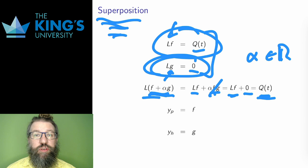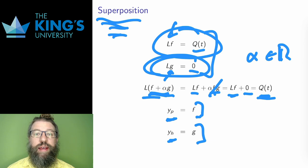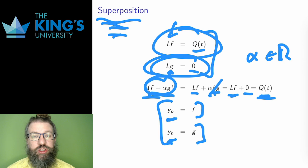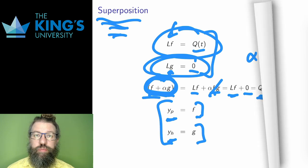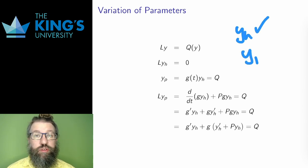I'll give f and g names: f is the particular solution y_p — a special solution to the non-homogeneous equation — and g is the general homogeneous solution y_h. In general, I'm going to look for a superposition of a particular and a homogeneous solution. I already know how to find the homogeneous solution. The hard part is finding the particular solution, which is something we don't know how to do yet.